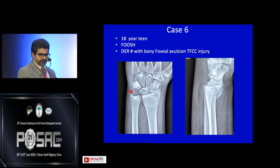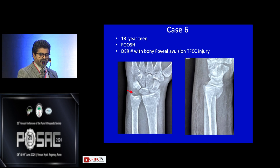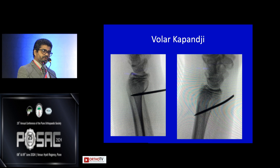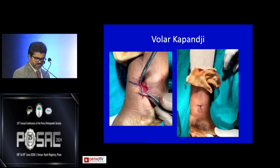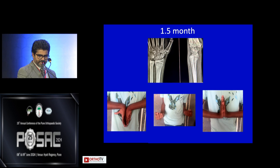Case number six: an 18-year-old with a fall on an outstretched hand with a distal radius fracture displaced volarly, along with an avulsion TFCC injury. We performed a volar Kapanji to reduce the fracture, and after one and a half months the patient achieved good range of motion. We also repaired the TFCC.